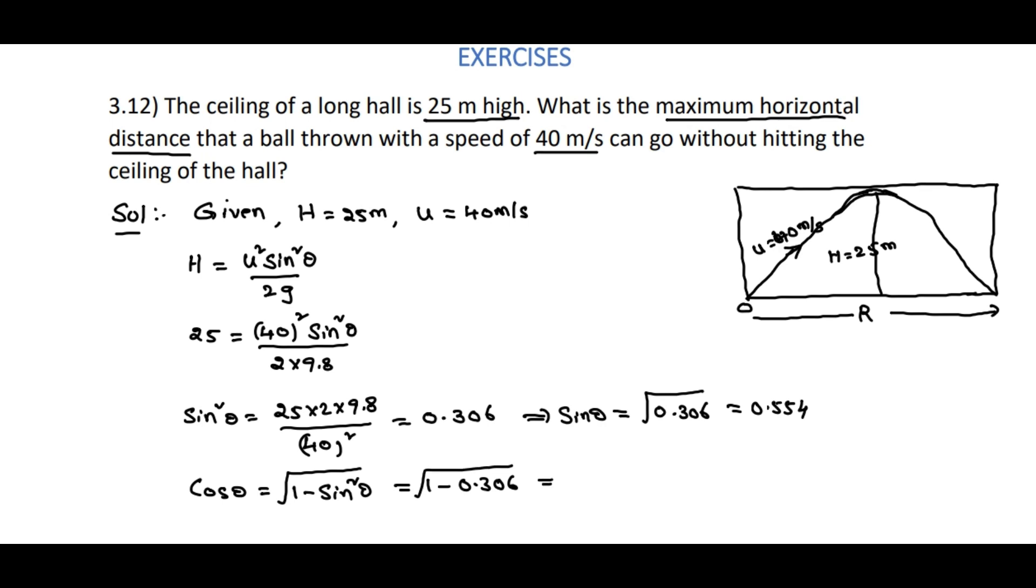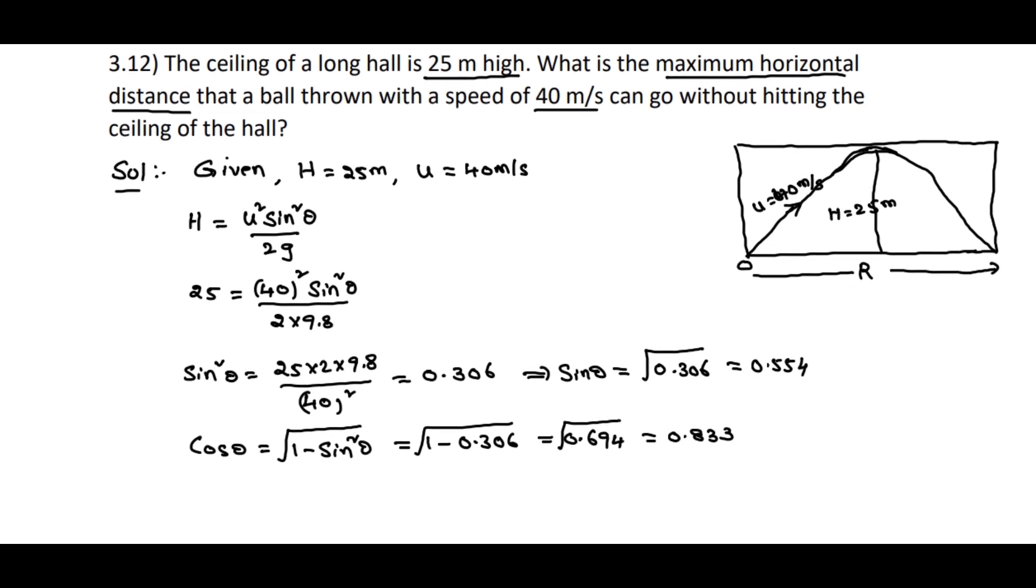That is equal to square root of 0.694, which equals 0.833. Now while coming to range, horizontal range R is equal to u² sin 2θ by g.